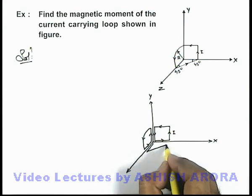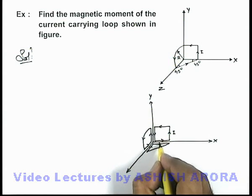And another is a triangular loop which is carrying a current in this direction, anticlockwise manner.